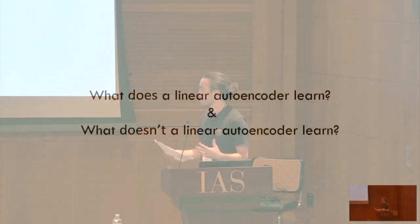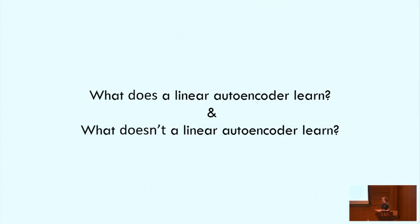Okay. Hi, I'm Daniel Kunin. I'm a first-year grad student at Stanford University working with Surya Ganguly, and I'll be presenting work I did last year along with John Bloom, Alex Cueva, and Cotton Seed at the Broad Institute. So the project grew out of an extremely simple question: What does a linear autoencoder learn, and what doesn't a linear autoencoder learn?